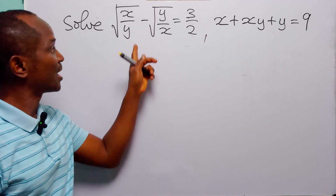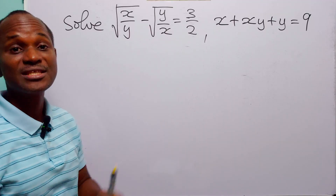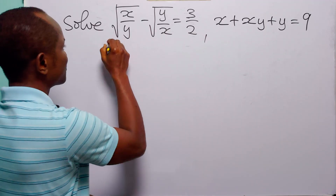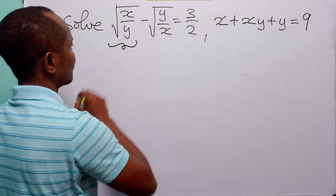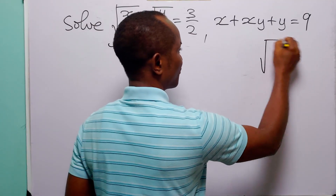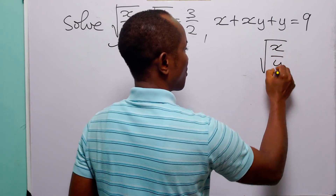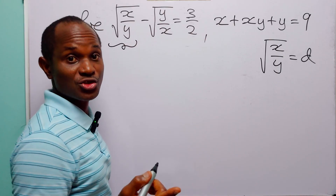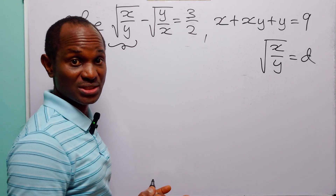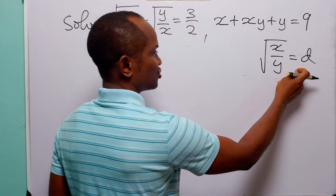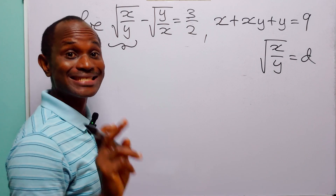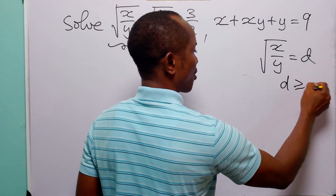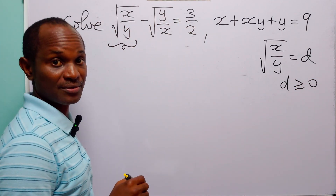To solve this problem, we are going to start with this first equation. What we will do is call this quantity — that is, the square root of x over y — d. You know that a square root must be positive, so this substitution comes with the condition that d must be greater than or equal to zero.